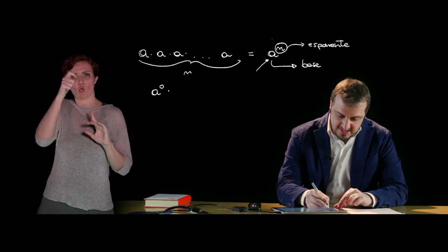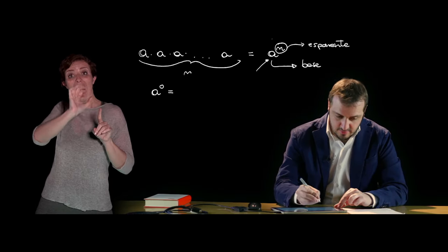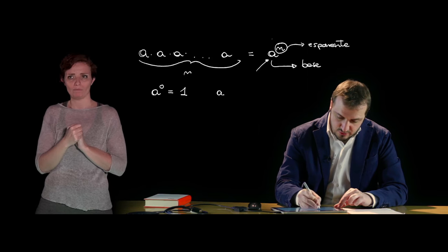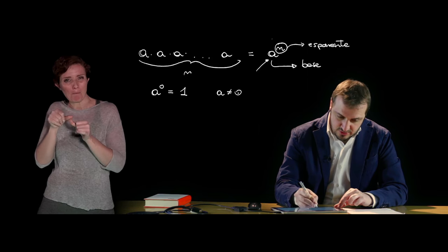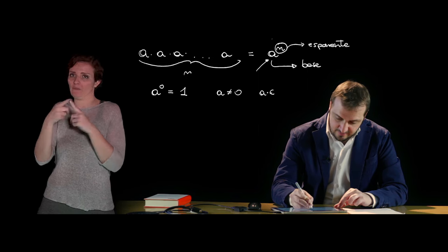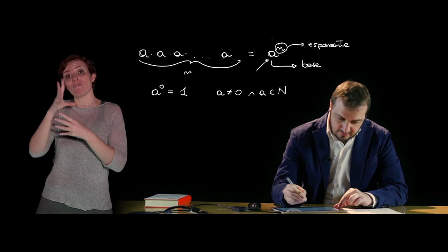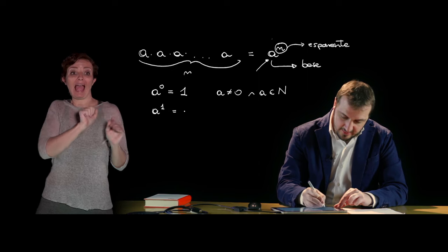There are some definitions that are associated with the base of the power: A to 0, which is a power with an exponent equal to 0, equals 1. This holds if A, the base, is different from 0 and belongs to natural numbers. A to 1 is equal to A.